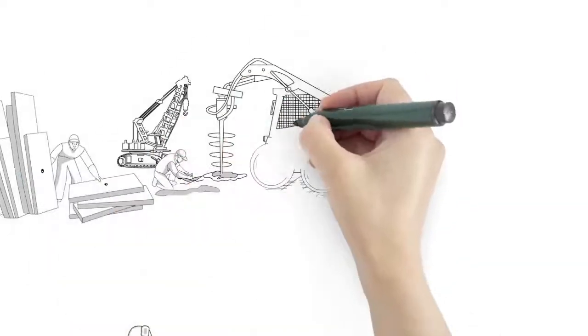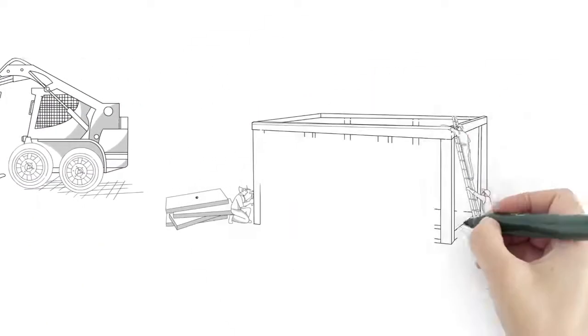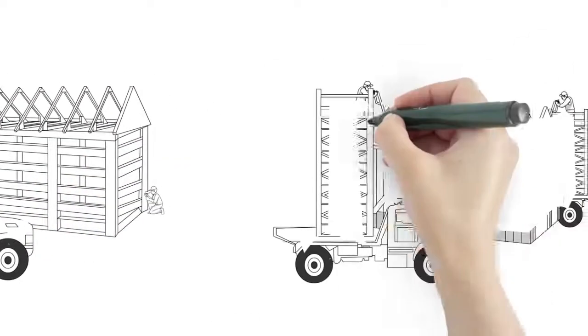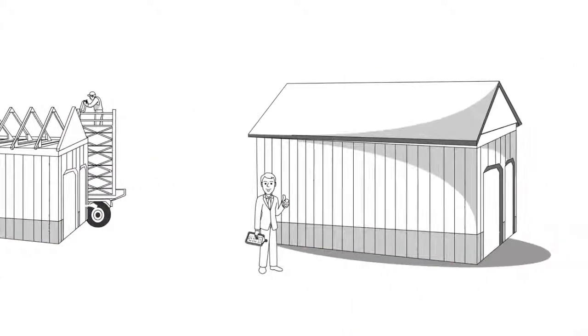A crew shows up to auger holes, place poles, framing, roofing, and siding, which can take several days or several weeks depending on the complexity of the building and weather conditions. Once all payments are received, we'll order the final inspection done by city officials.